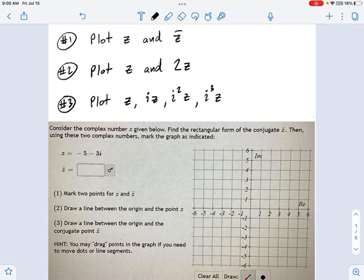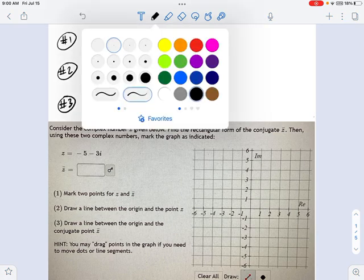So we've been over the basics of how to plot rectangular complex coordinates in a coordinate plane with the real and imaginary axis. Now what I want to do is talk about three ideas.